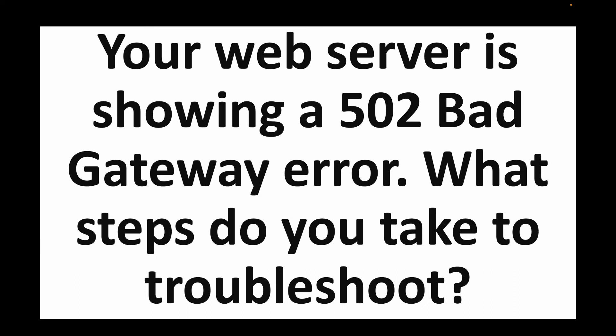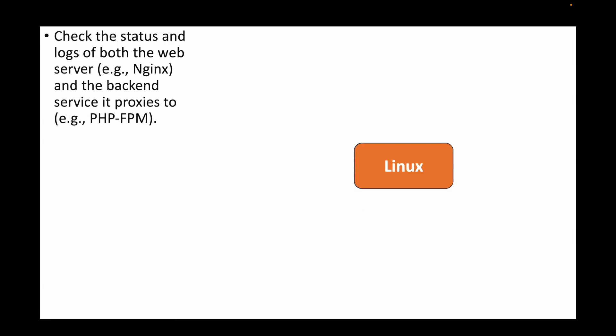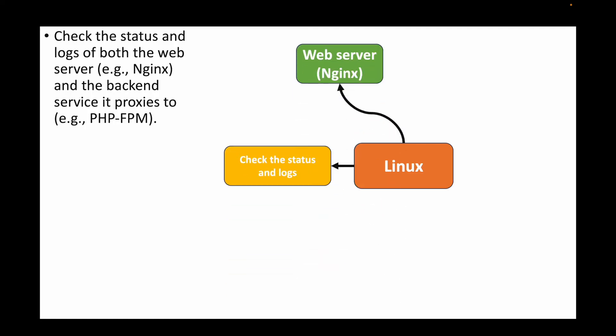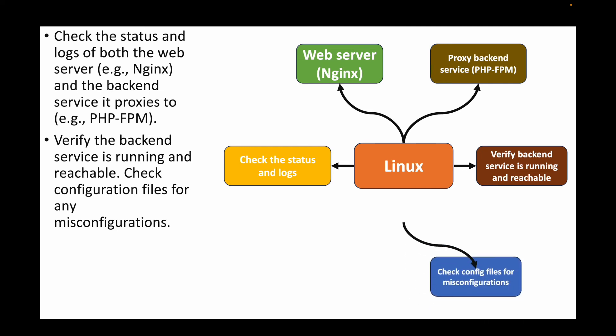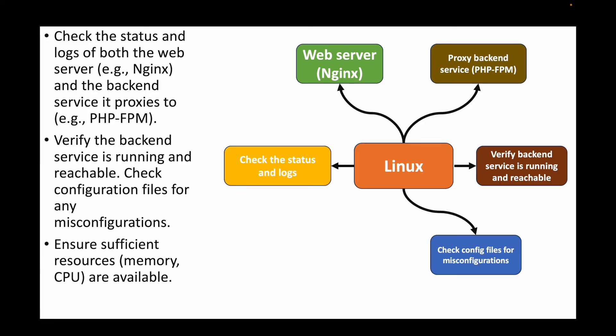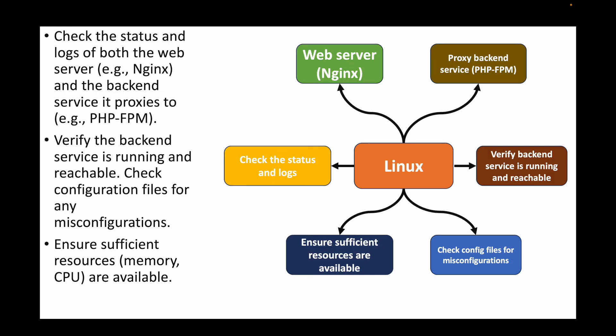The next question: your web server is showing a 502 Bad Gateway error — what steps do you take to troubleshoot this? Check the status and logs of both your web server (e.g., nginx) and the back-end service it proxies to (e.g., php-fpm). Verify that back-end services are running and reachable, check configuration files for misconfigurations, and ensure sufficient CPU and memory resources are available.